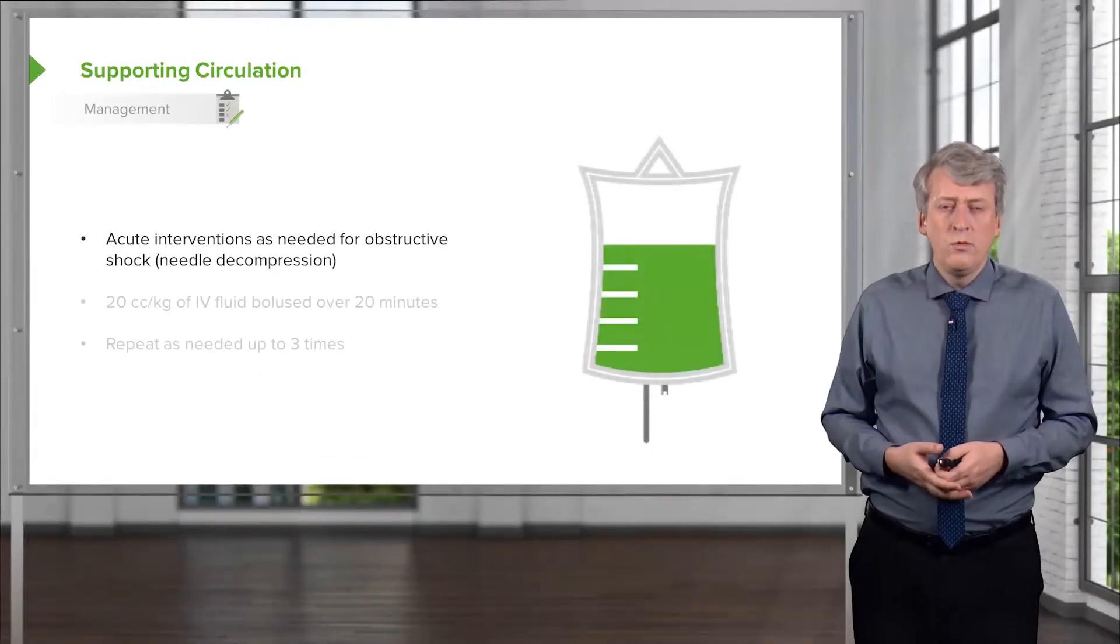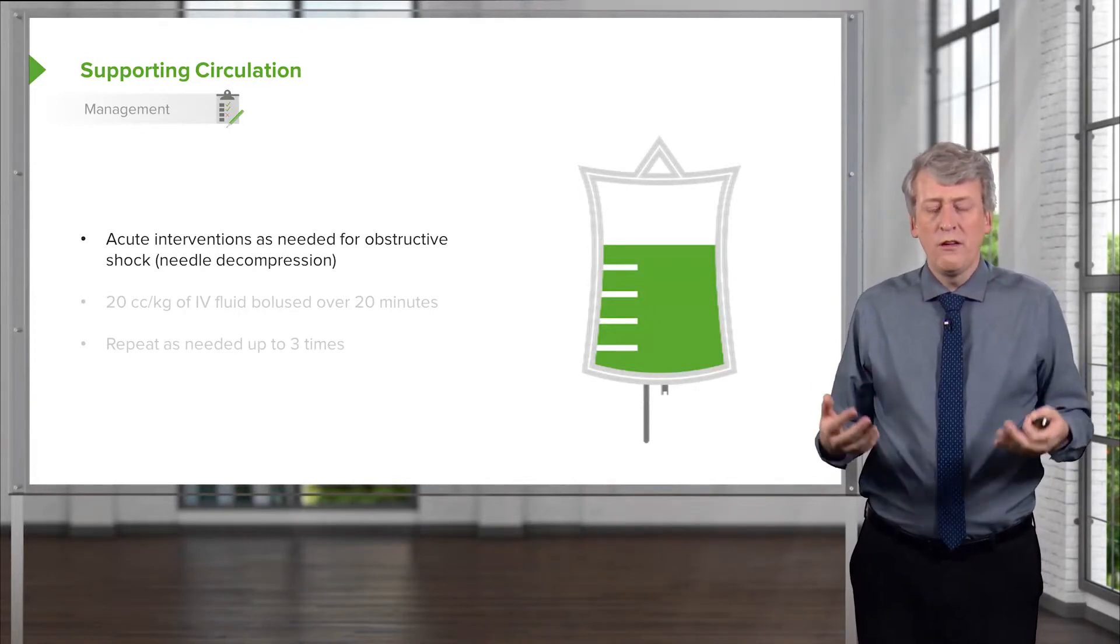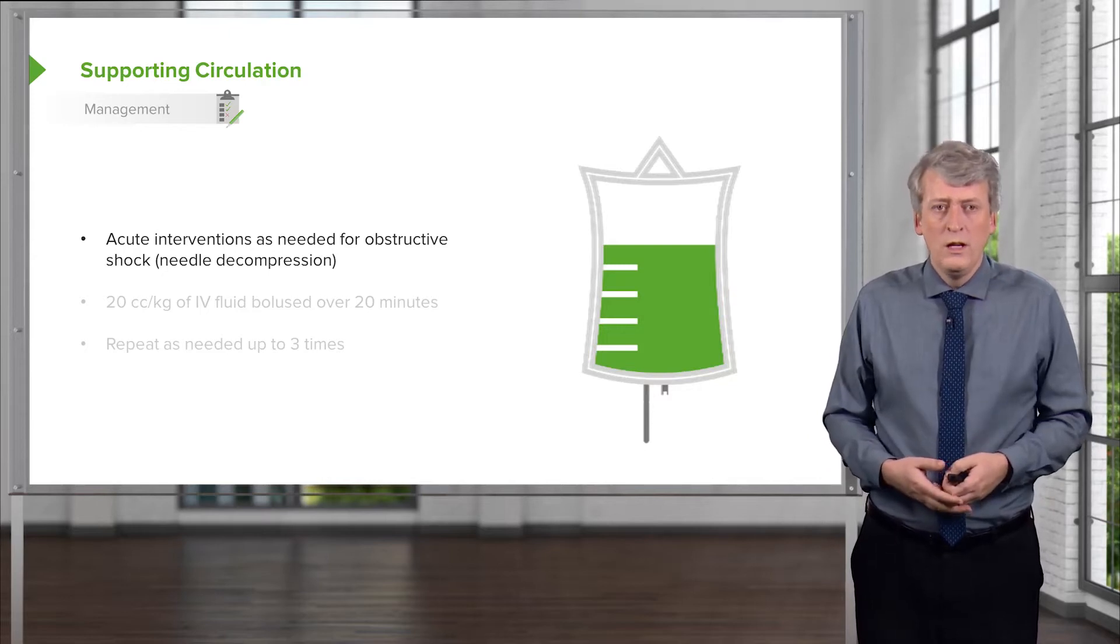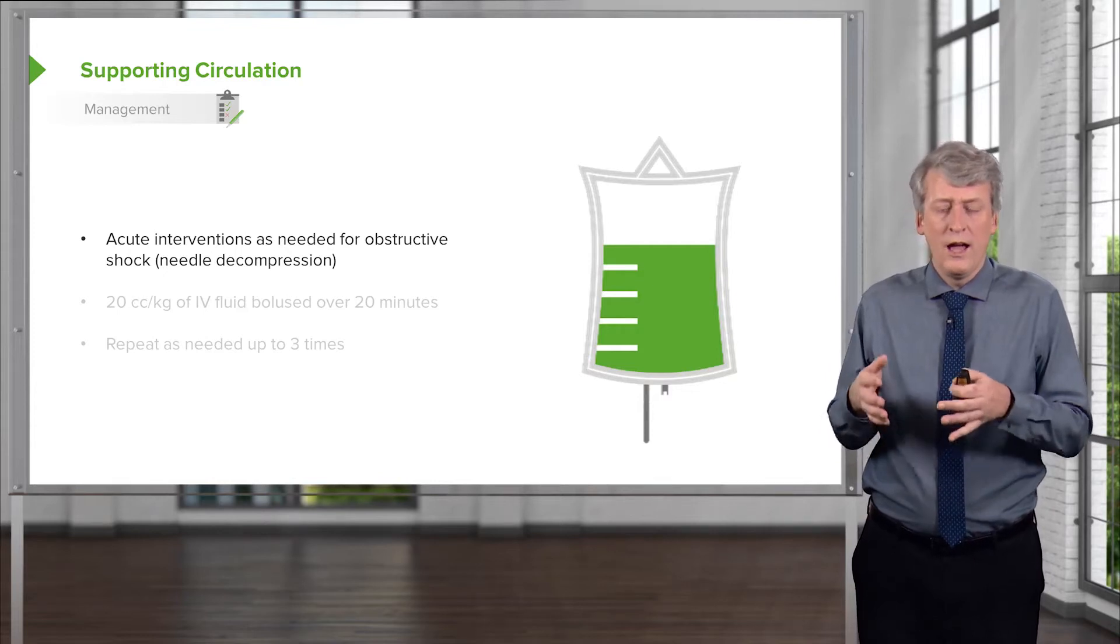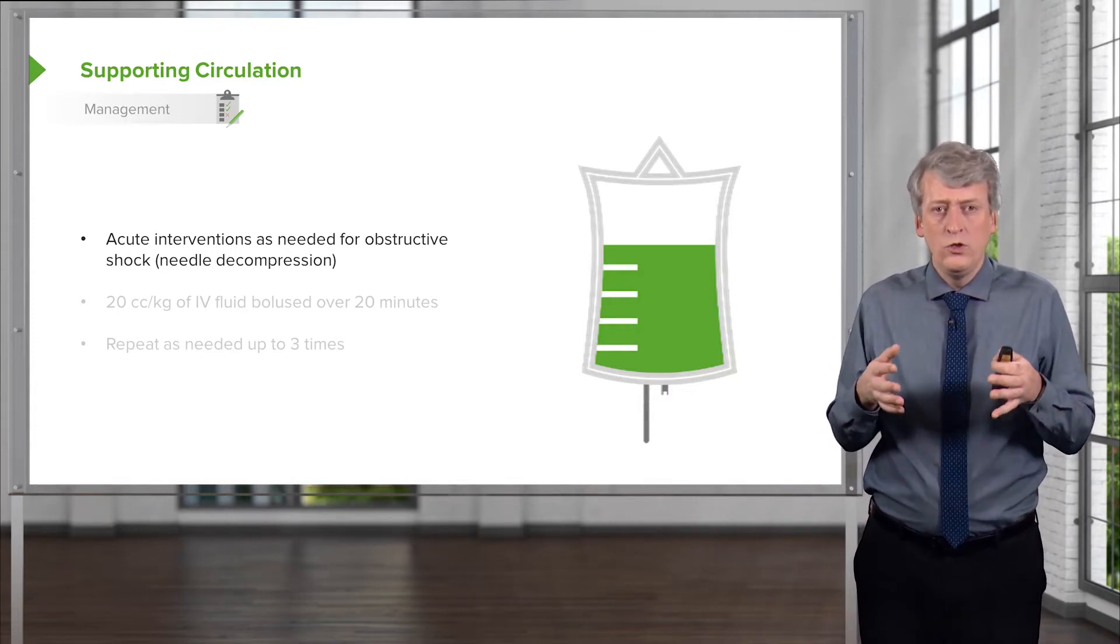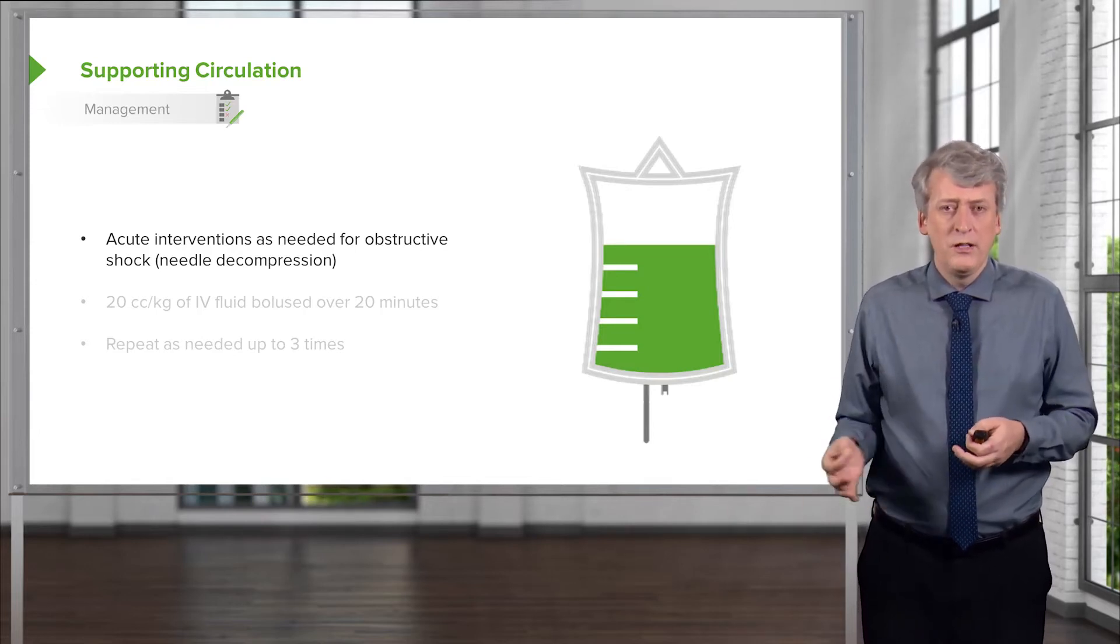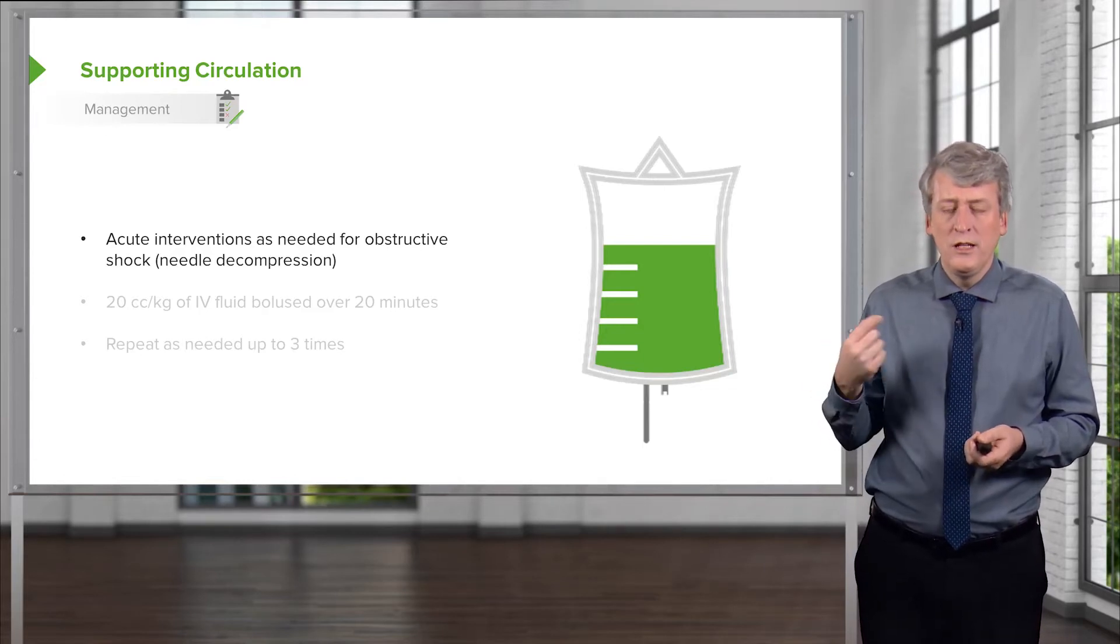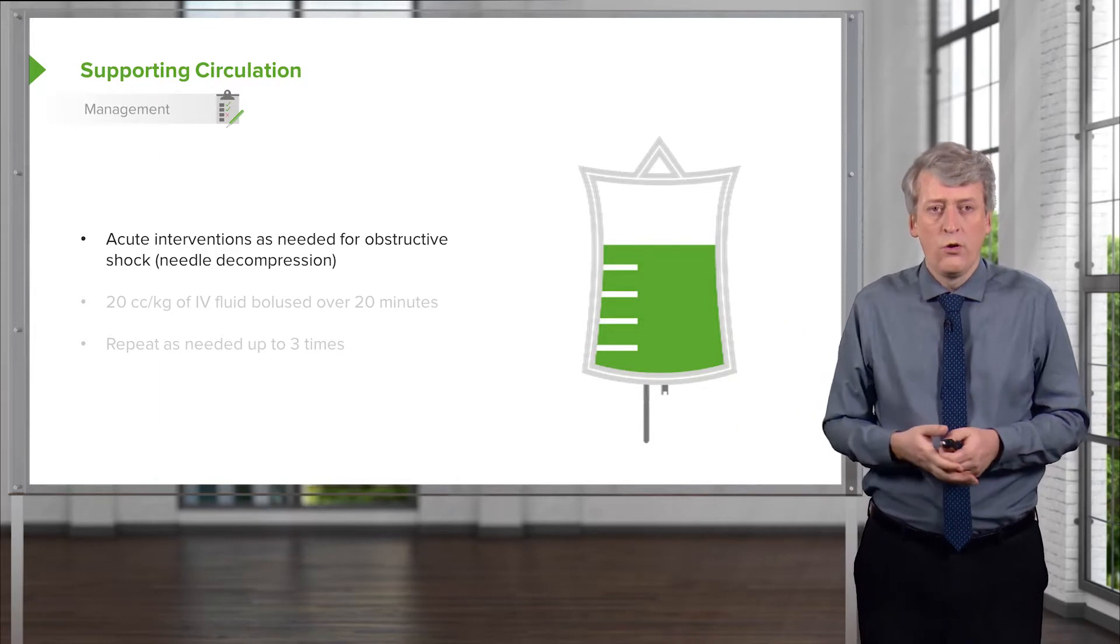So what are the things we need to do? A patient comes in with shock, generally the first thing we need to do is support that circulation. So obviously if there's an obstructive shock, before we're giving IV fluids, we need to do an emergent fix of the obstruction. So for example, in a tension pneumothorax, before giving IV fluids, we really need to do a needle decompression.